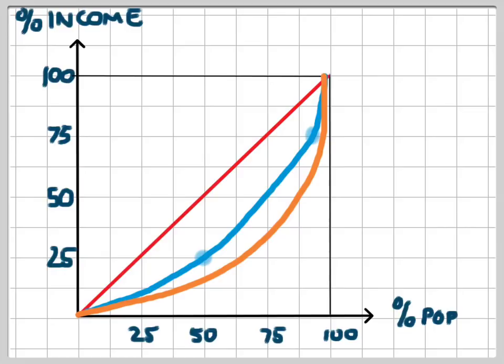So if we drew in another Lorenz curve for a different economy, we've got now a blue economy and an orange economy. In the orange economy, the distribution of income is much less even, because the Lorenz curve is further away from the line of perfect equality. In the blue economy, we have a more equal distribution of income, because we're closer to that situation of perfect equality.